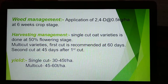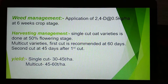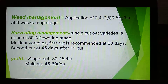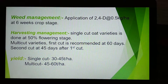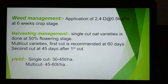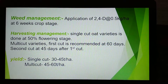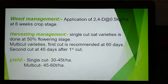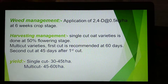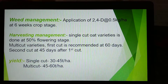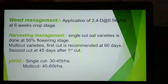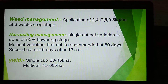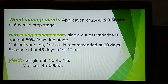Harvesting management: Single-cut oat variety is harvested at 50% flowering stage. For multi-cut varieties, the first cut is recommended at 60 days, and subsequent cuts at 45 days after the first cut. Yield of single-cut varieties is 30–45 tons per hectare and multi-cut varieties 45–60 tons per hectare.